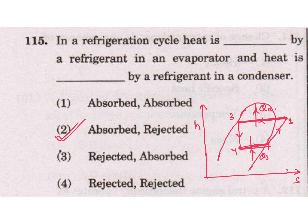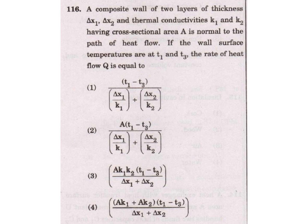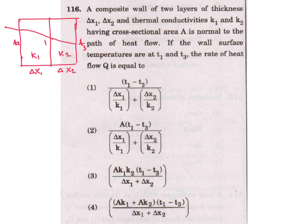Question: A composite wall of two layers of thickness delta X1 and delta X2, and thermal conductivity K1 and K2, having cross sectional area A is normal to the path of heat flow. If the wall surface temperatures are at T1 and T3, the rate of heat flow Q is equal to how much? So it is a composite wall. This is composite wall having thickness del X1 and del X2. Conductivity is K1 and K2. Here wall surface temperature - this is T1, this is T3. Q will flow like this. Heat flow Q.